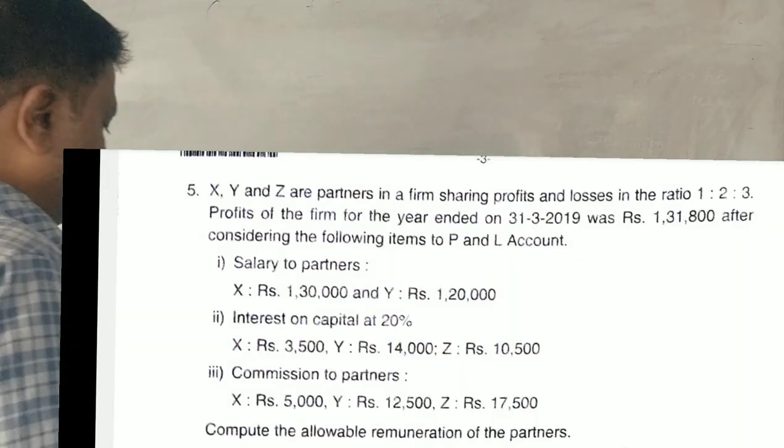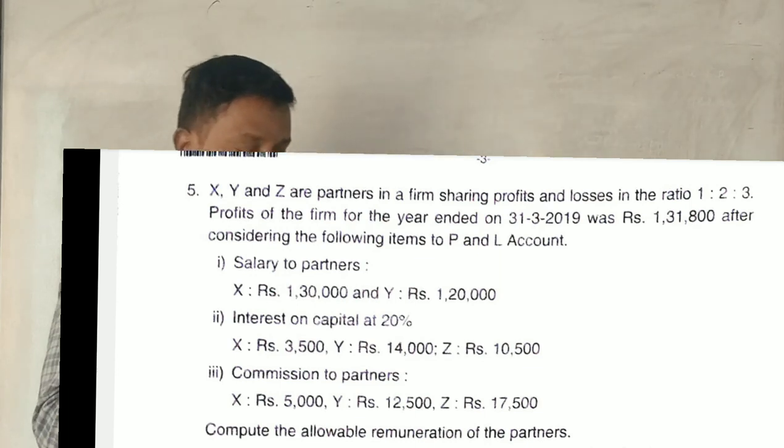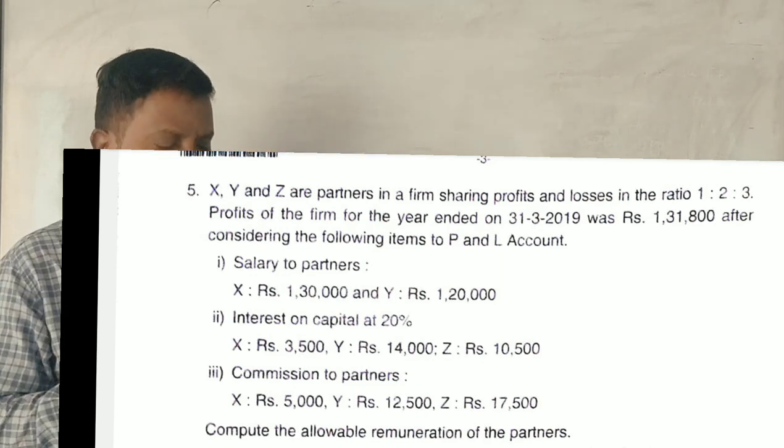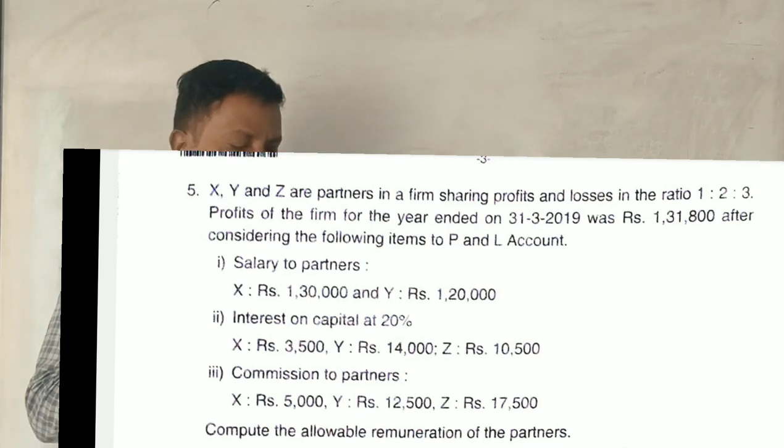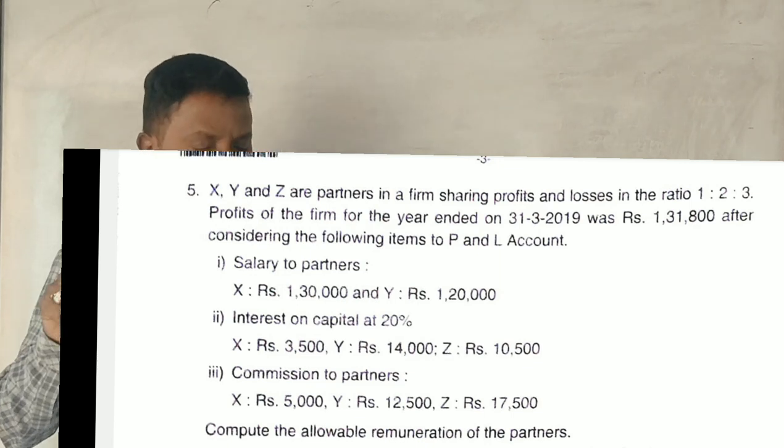Hello students, welcome to Business Taxation, assessment of firm, 2020 question paper. X, Y and Z are partners sharing profits and losses in the ratio of 1:2:3.